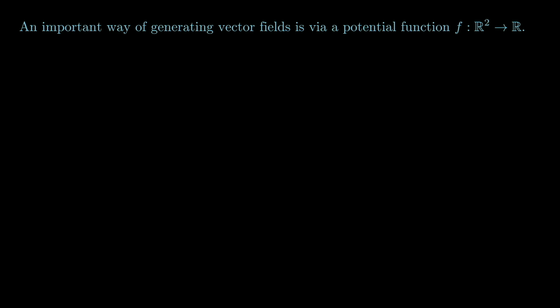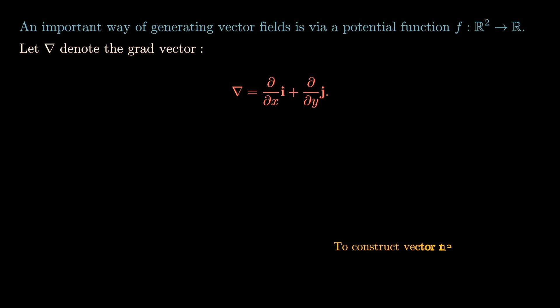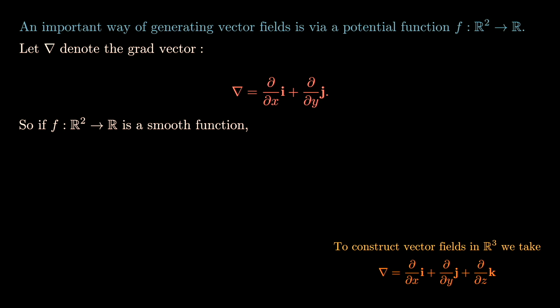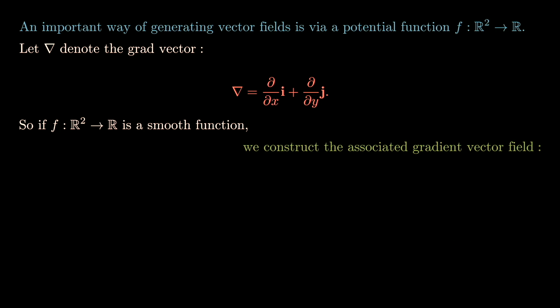An important way of generating vector fields is via potential functions, using the gradient operator nabla. The gradient is defined by the coordinate partial derivatives: nabla = (∂/∂x) î + (∂/∂y) ĵ. If f: R2 → R is a smooth function, the associated gradient field is nabla f = (∂f/∂x) î + (∂f/∂y) ĵ.